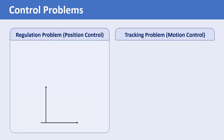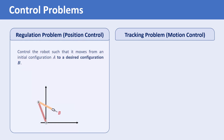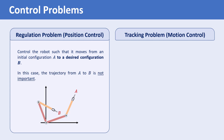In the regulation problem, the desired location and orientation of the end effector, denoted by B, is given to us, and we want to control the robot such that it moves from an initial configuration A to the desired configuration B. In this case, only the desired configuration is important, and the robot can move on any trajectory that ends at configuration B.